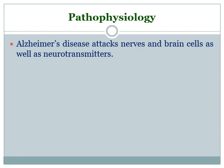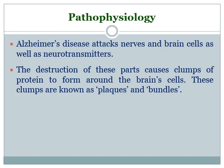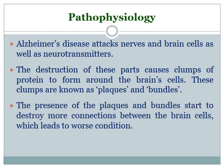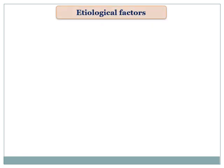Now let me describe the main objective of this presentation — the pathophysiology of Alzheimer's disease. Alzheimer's disease attacks the nerves and brain cells and affects the release and functioning of neurotransmitters. Such destruction causes clumps of proteins to form around the brain cells. These clumps, known as plaques and bundles, start to destroy more connections between brain cells, further worsening the condition of the neurons.